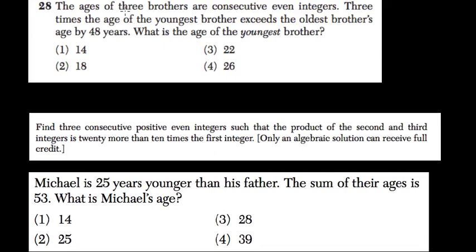In the first example, we've got three brothers and they have consecutive even integers as ages. The ages of the three brothers are consecutive even integers. Three times the age of the youngest brother exceeds the oldest brother's age by 48 years. What is the age of the youngest brother? They're giving us a system of equations here.